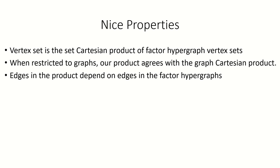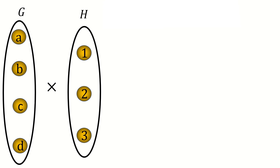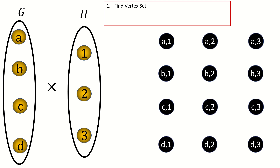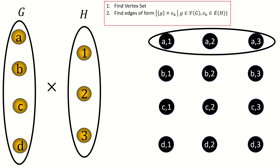Let's work through an example. What's the Cartesian product of these two hypergraphs? First, find the vertex set — here it is. Next, let's look for all edges of the first form, which is where the left coordinates are the same and the right coordinates form an edge. Starting with left coordinate A, what sets of vertices form an edge in the right factor hypergraph H? There's only one set that forms an edge: 1, 2, 3. So in the product, the vertices A1, A2, and A3 form an edge.